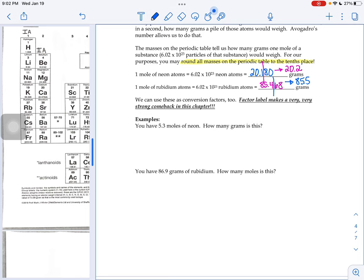Well, those look like conversion factors to me that we could do a factor label problem with. If you have 5.3 moles worth of neon and I said, how many grams would that be? We need a moles-grams conversion factor. Well, we've got one right here. A mole's worth of neon weighs 20.2 grams.